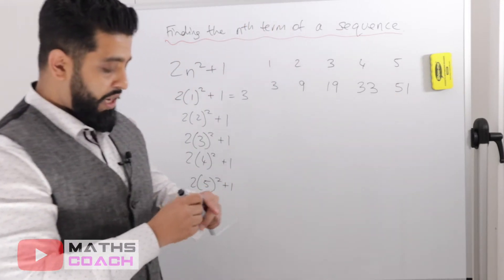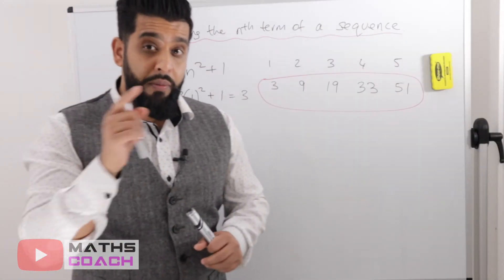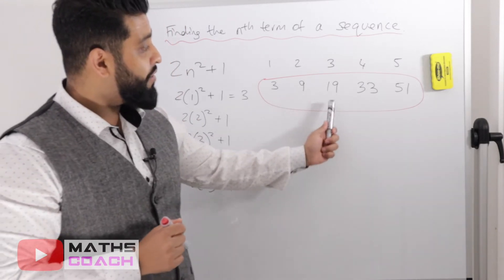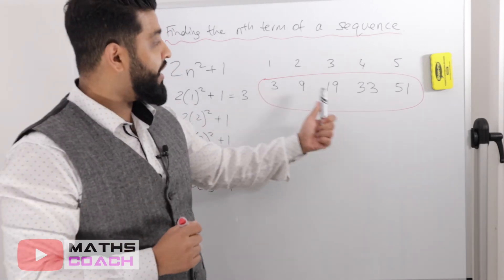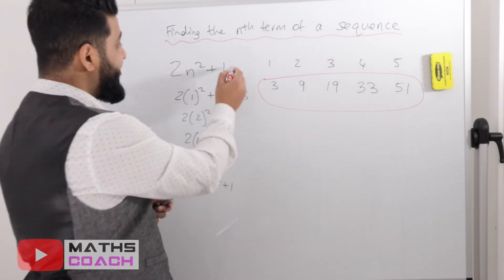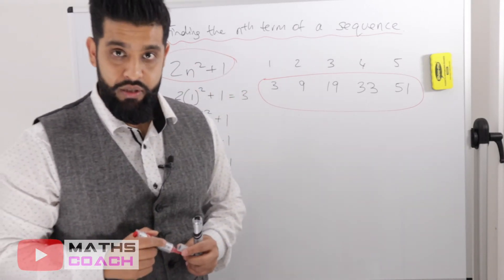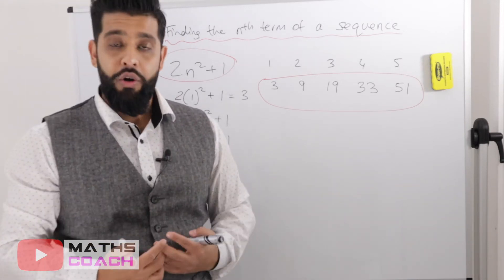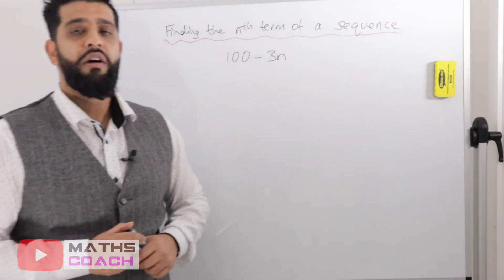Unlike the previous example, you'll find there is no constant difference between each term — that's because this is a quadratic sequence. The objective of this lesson is to concentrate on linear sequences, so look out for a later video on quadratic sequences.